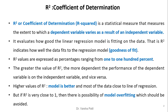Coefficient of determination is a statistical measure that measures the extent to which a dependent variable varies as a result of an independent variable. It evaluates how good the linear regression model is fitting on the data. R-square indicates how well the data fits to the regression model. It is a goodness of fit.